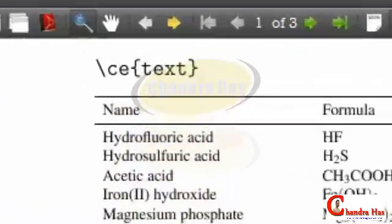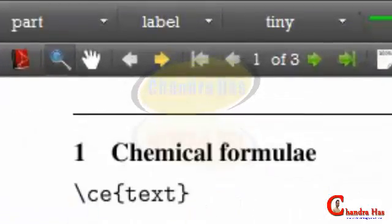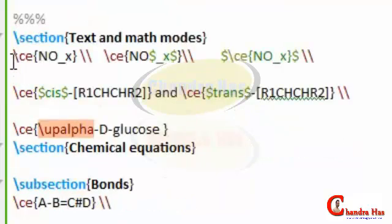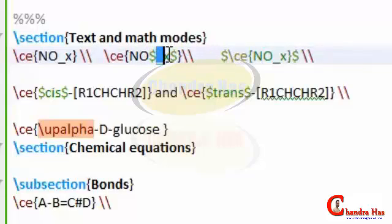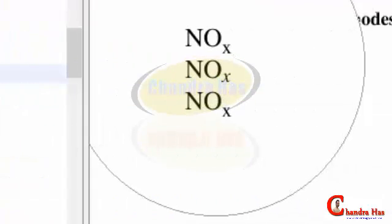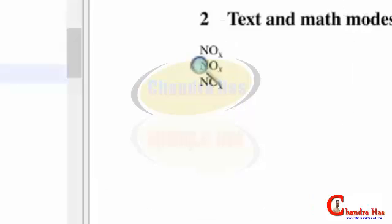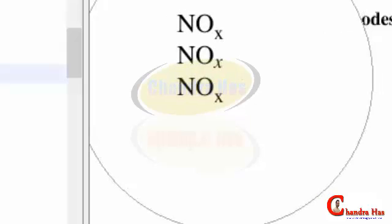This command works in both text and math modes. I have given three examples: the first is written directly in text mode, the second is partially in text mode and partially in math mode — where x is in math mode — and the third is completely in math mode. In the output file we can see there is no visible difference between text and math mode results.